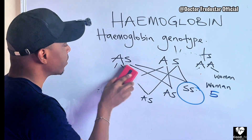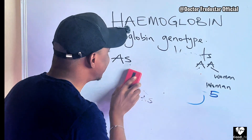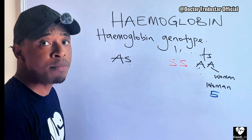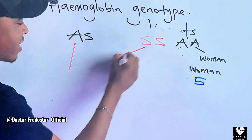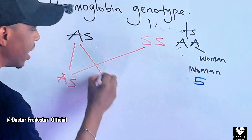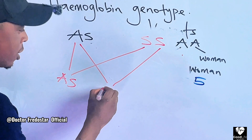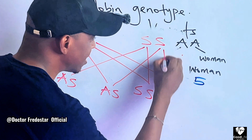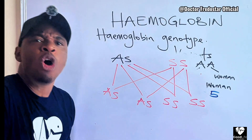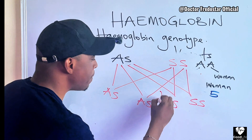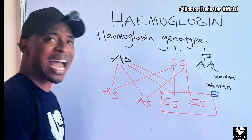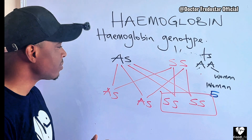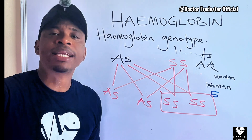What if you are AS and the person you want to marry is SS? That is a very big problem. If your A meets their S, the child could be AS. If your A meets their other S, the child could be AS. If your S meets their S, the child could be SS. If your S meets their other S, the child could be SS. So there is a very high chance of giving birth to an SS child.